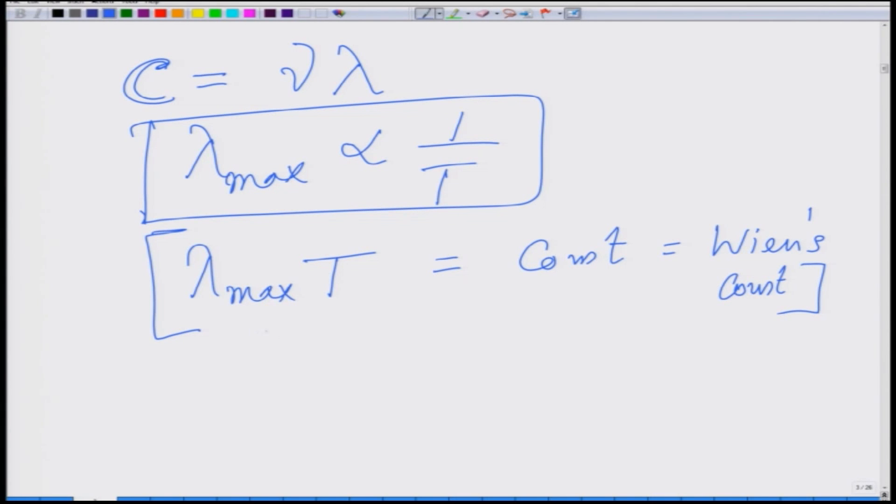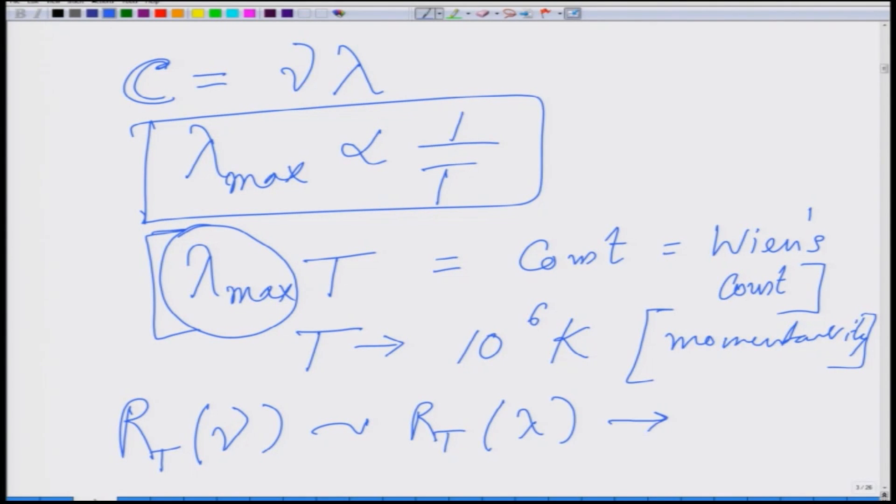It is given that the temperature is 10 to the power 6 Kelvin momentarily. So we need to find out the wavelength at which this R T nu or I can also write it as R T lambda becomes maximum.